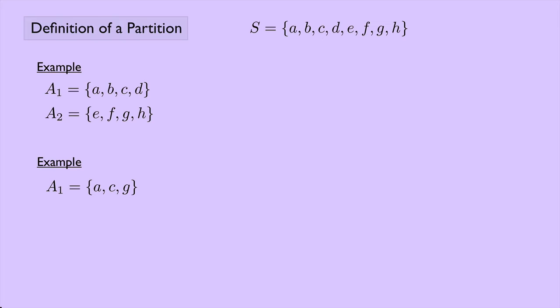Here's another example. Suppose A1 is A, C, and G. A2 is just the element B, and A3 is D, E, F, and H. If we look at this, we see that every element of S is in one of these three cells, and we see that the cells are disjoint.